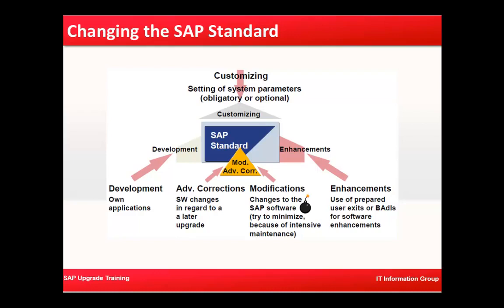Then we have advanced corrections — that is software changes in regard to a later upgrade. Modifications are changes to SAP software; try to minimize these because they require intensive maintenance. When we are doing any modifications, we need to make sure we are not touching SAP standard objects as much as possible, because if we modify any SAP standard objects we need to take care of them during our upgrade.